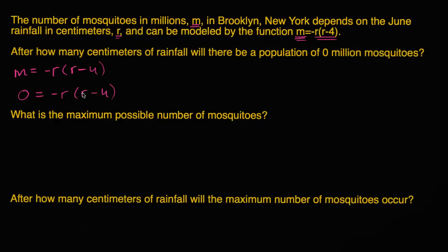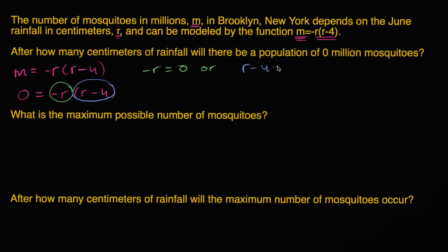In order for this expression to be equal to zero, notice it's a product of two expressions. We are multiplying negative r times r minus 4. So if you're multiplying two expressions and you get zero, one or both of them need to be equal to zero. Either negative r is going to be equal to zero — which means r equals zero — or r minus 4 is equal to zero, which means r equals 4. So either no rainfall or four centimeters of rainfall gives you a population of zero mosquitoes.